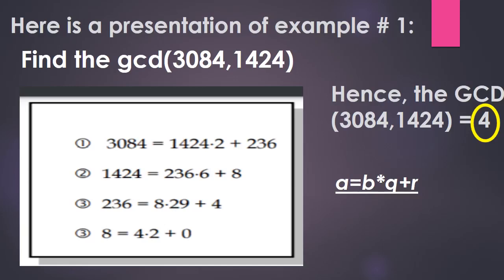The new A is 236 and the new B is 8. We then divide 236 by 8, giving quotient 29 and remainder 4. The next step gives new A as 8 and new B as 4. So, 8 divided by 4 gives quotient 2 with remainder 0. Once the remainder becomes 0, we look for the last non-zero remainder. Hence, the GCD of 3084 and 1424 is equal to 4.